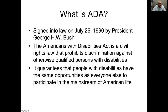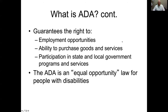What is the ADA? ADA is the Americans with Disabilities Act, signed into law by George H.W. Bush in 1990. It's a civil rights law that prohibits discrimination against otherwise qualified persons with disabilities. It does not mean that if two people apply for a job, one disabled and one not, the job must go to the person with a disability. It just guarantees equal opportunities — in employment, purchasing goods and services, and participation in state and local government programs.